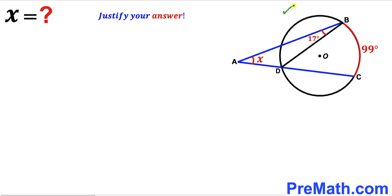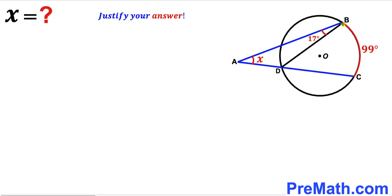Here's our next diagram. We have a circle with center O, along with secant lines AB and AC. BD is a chord such that angle ABD is 17 degrees, and angle DAB is represented by x. Furthermore, arc BC measures 99 degrees. Our task is to find the value of angle x.